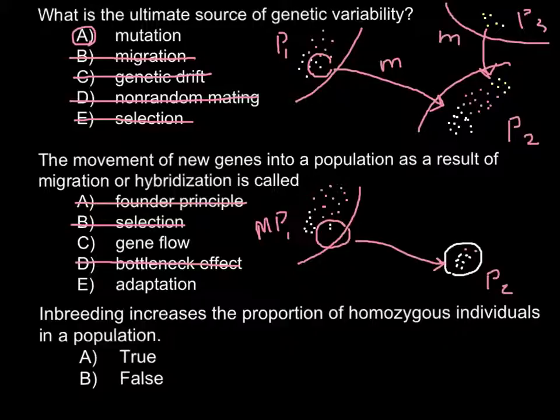Answer E, adaptation — for example, if you live in the north and move to a southern region with more sun radiation, your skin becomes darker as a defense mechanism. This is an example of adaptation, and it has nothing to do with the movement of new genes into a population as a result of migration. So we cross out this answer too. What we are left with is answer C: the movement of new genes into a population as a result of migration or hybridization is called gene flow.